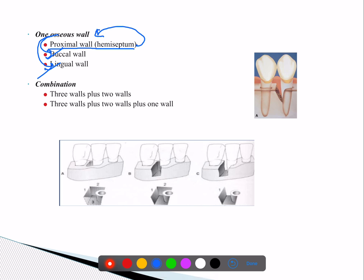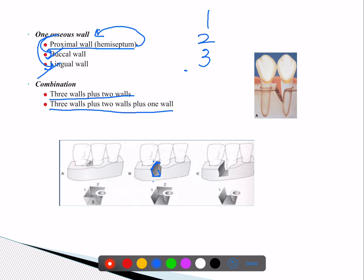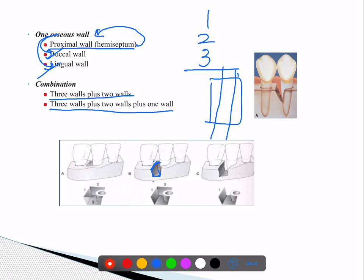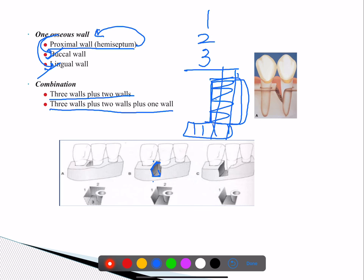In a combined wall defect, when viewed from above you may see only one wall, but as you go deeper you may see two walls, and at the apex three walls. So it can be a three-wall plus two-wall plus one-wall combination. This is called a combined wall defect.